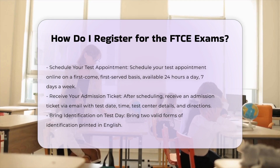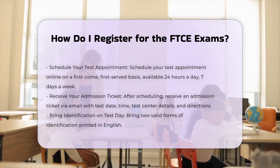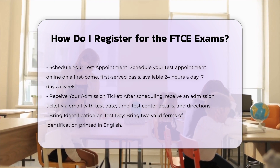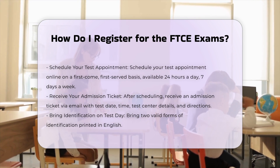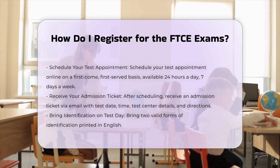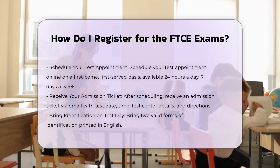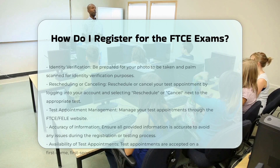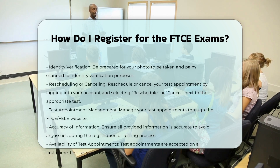Step 7: Receive your admission ticket. After scheduling your test, you will receive an admission ticket via email. This ticket will include your test date, time, the address and phone number of the test center, and directions to the test center.